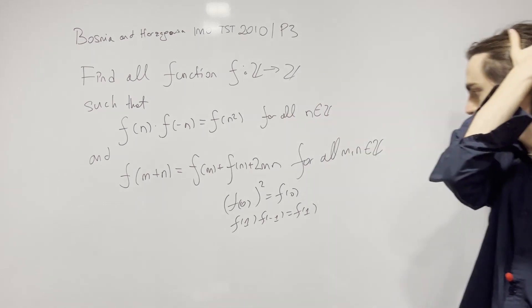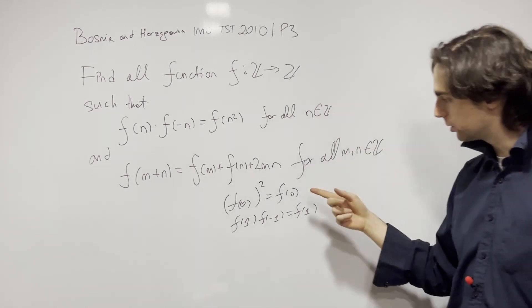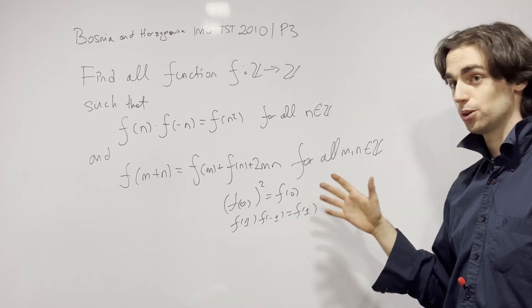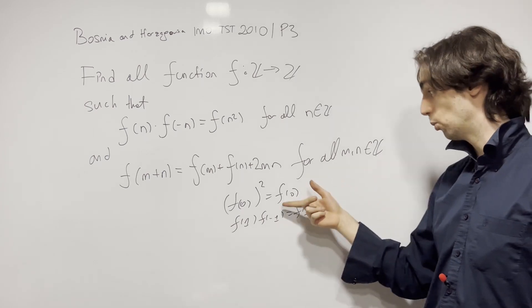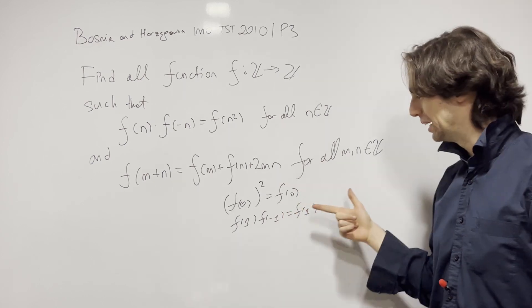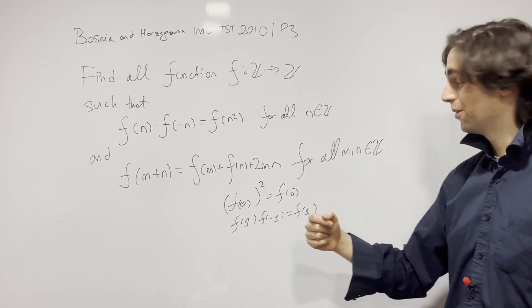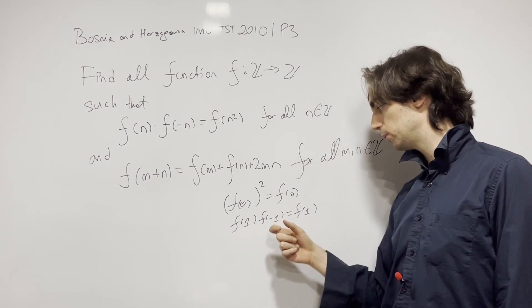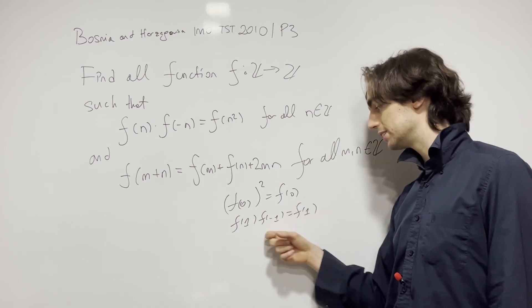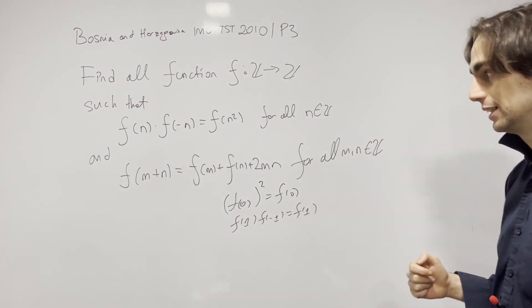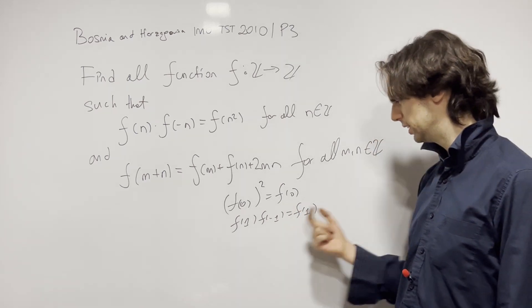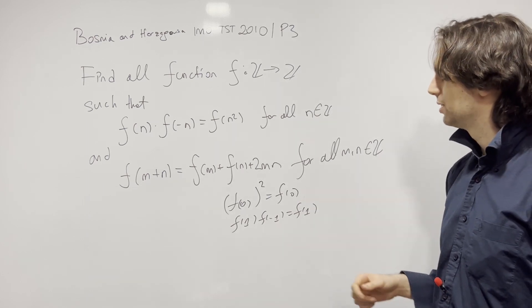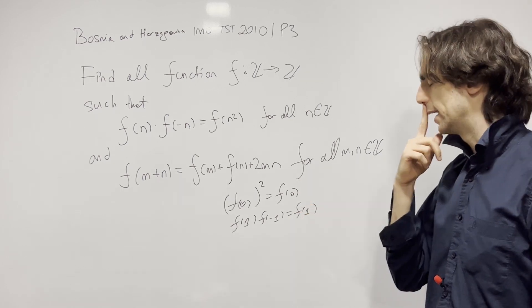So just from this first condition, f(0) is going to be either 0 or 1. And same for f(1): if f(1) = 0, then we only know f(1) = 0; but if f(1) ≠ 0, then f(-1) = 1. So there are a couple of cases we could be looking at here.